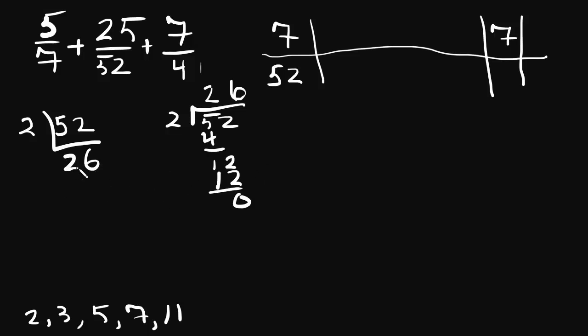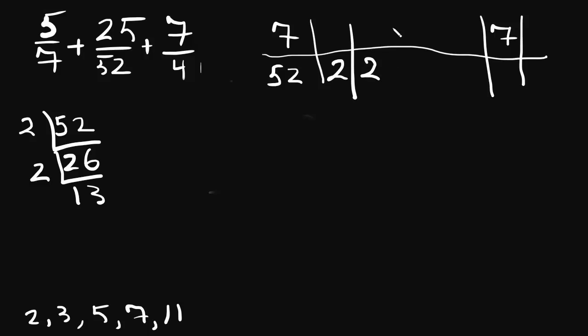And 2 goes into 26. Well, 2 into 26. 2 goes into 2 once. 2 there. Bring down the 0. Bring down the 6. 2 goes into 6 three times. So 2 goes into 26 13 times. Now, let's clear a little space. So 52 factors into 2 and another 2 and a 13.